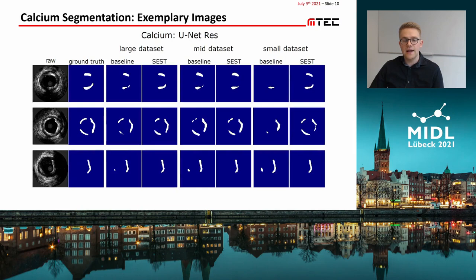Here are some exemplary images. We see that especially for smaller datasets, CEST-CNNs detect more calcified regions, for example in case 1 and case 2, and it leads to less false positives, as can be seen in the third case.